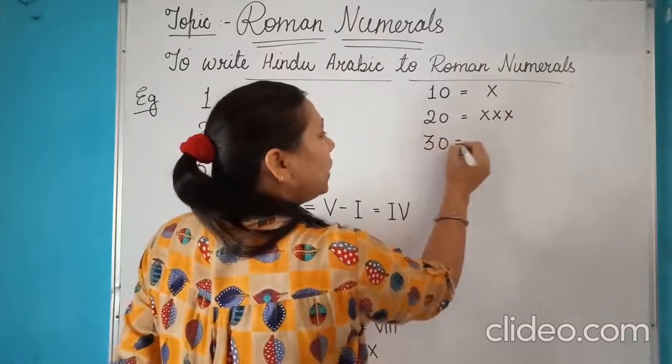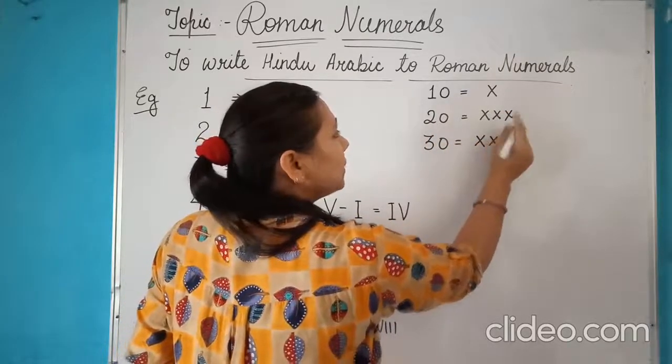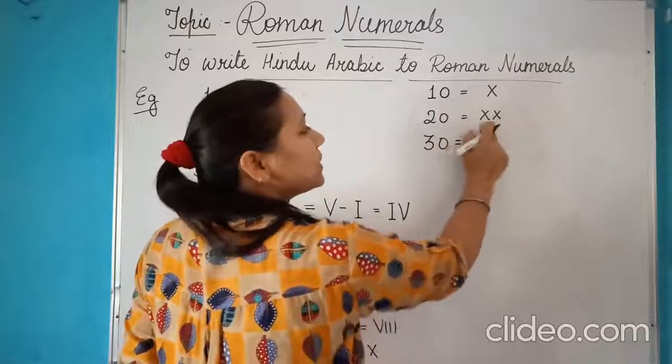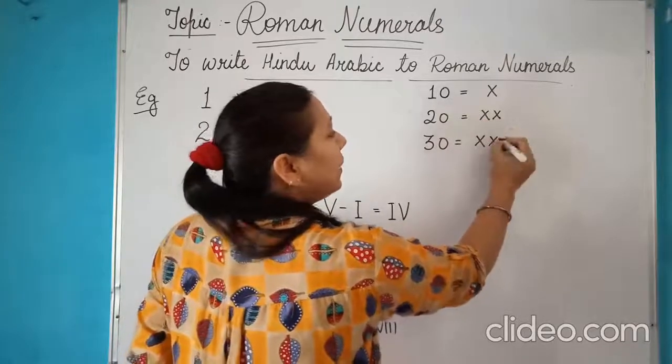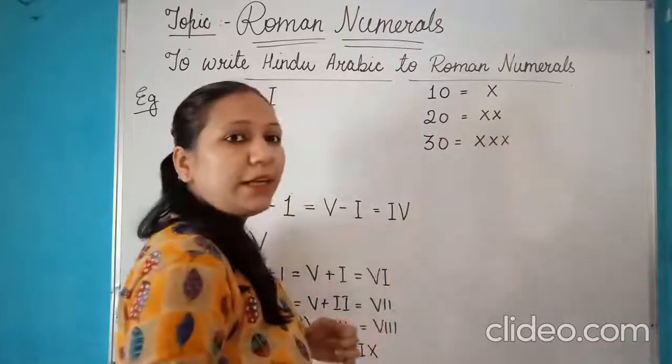The symbol for 30 in Roman format—sorry, this is 2X only because it is 20, 2 times 10. Then for 30, it is 3 times X, which is XXX.